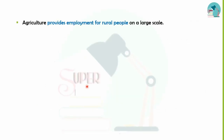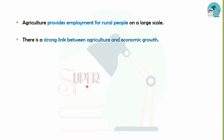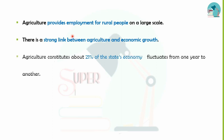Agriculture is on a large scale. In India, it contributes to income and local livelihoods, and agriculture is a strong link — constituting around 21% of the economy, though this percentage fluctuates from year to year.